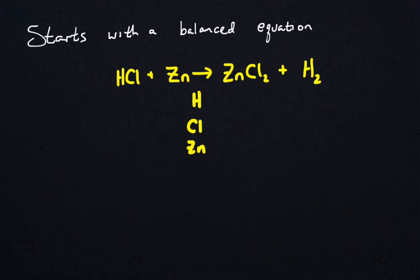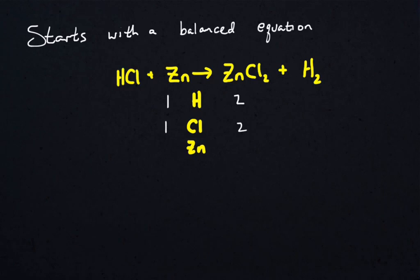We're going to create a chemical inventory. I'm going to write down all of the different elements found in the reactants and the products. There's H, there's chlorine, and there's Zn. There's one H on the left, two Hs on the right. There's one Cl on the left, two Cls on the right. There's one Zn on the left and one Zn on the right.